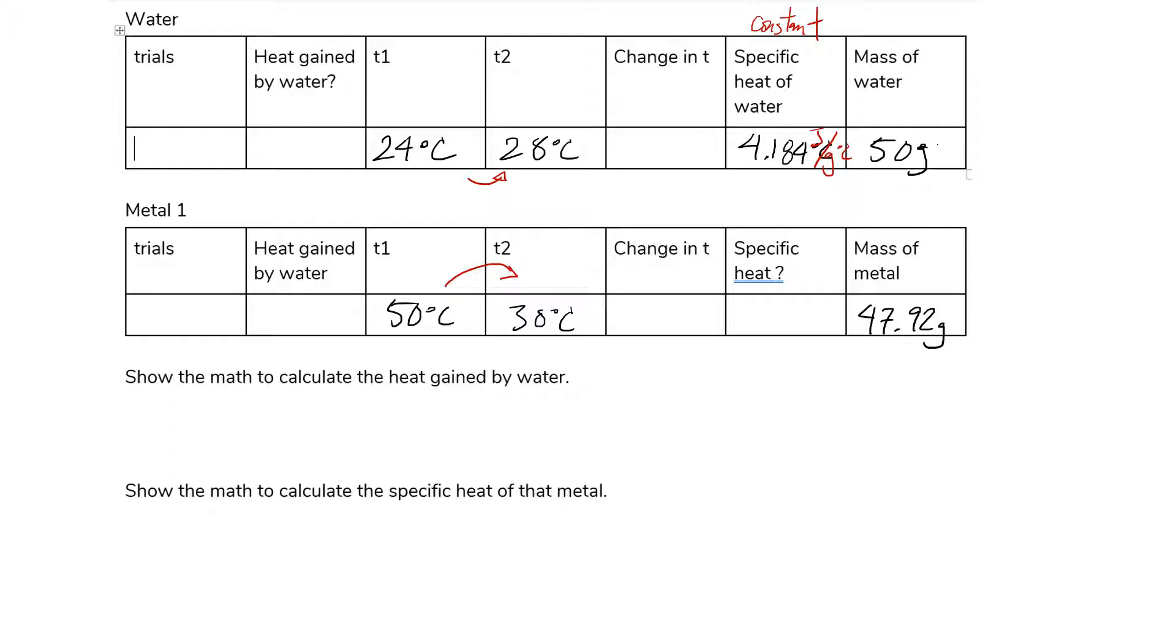So again, I have a change in temperature. And then as I was doing lab, I measured the mass of the metal on a scale and that was 47.92. All these numbers put together will help me find the specific heat of that one metal and that will help me determine the identity of that metal. So let's get started.